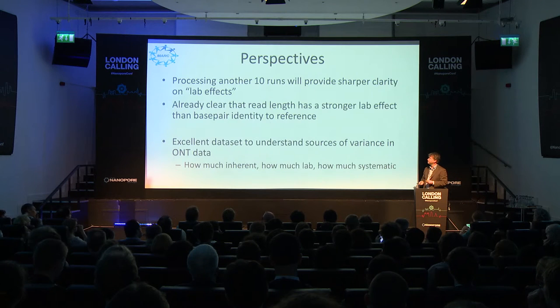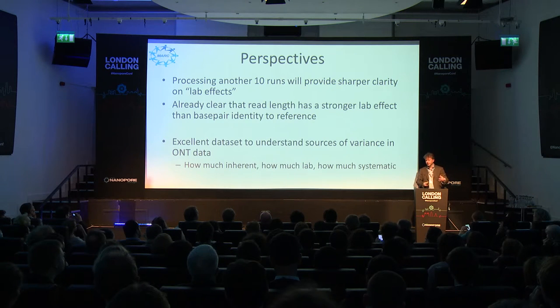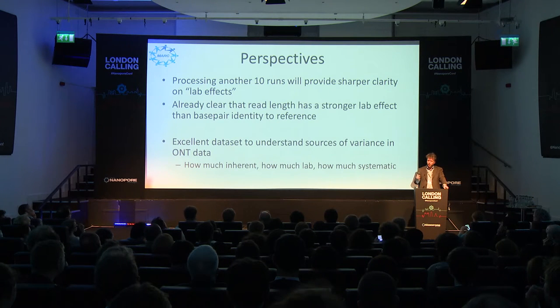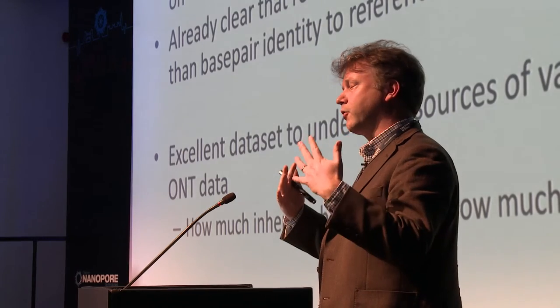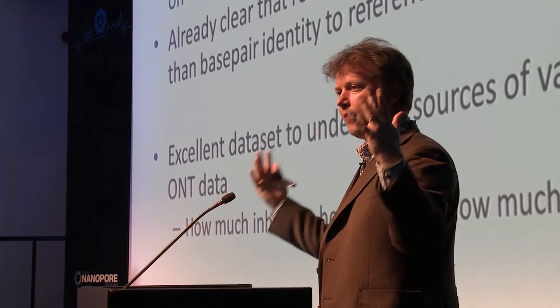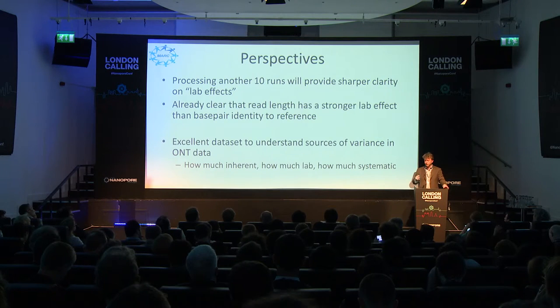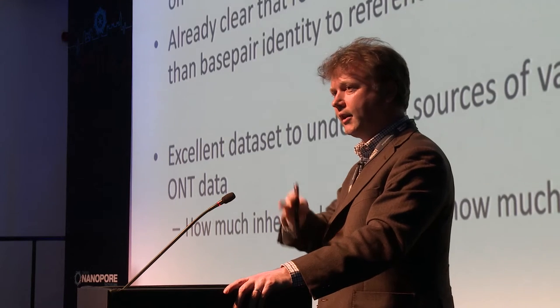Looking at the perspectives of this consortium over the next couple of months: we will be processing another 10 runs in phase 1B. That will provide sharper clarity in what I would call lab effects — which parts of the process show strong lab-specific variance or lab-specific mean. It's already clear that read length shows a stronger lab effect than base pair identity, which is exactly what you'd expect.